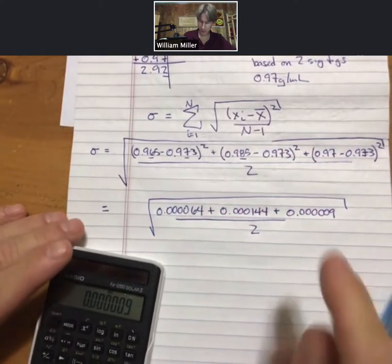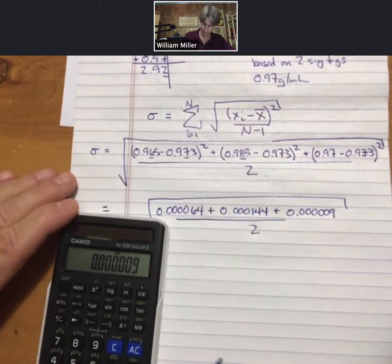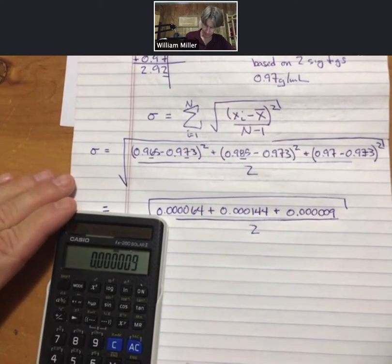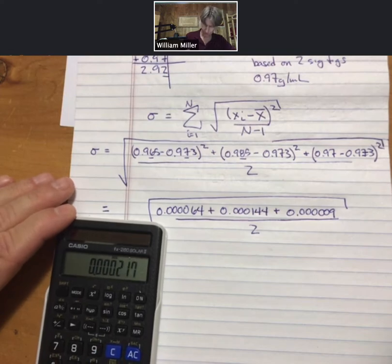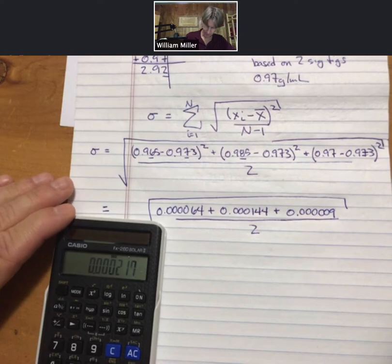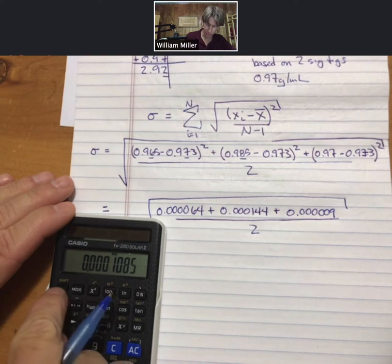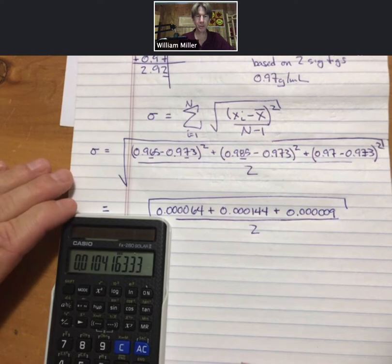So far so good. Now I'm going to add these three numbers up, divide by two, and then square root it. I've already got this last one in here, plus 0.000144 plus 0.00064 equals, divide by two, and then my square root is right above my square, so I hit shift and I get that my standard deviation is 0.0104.